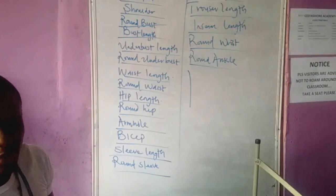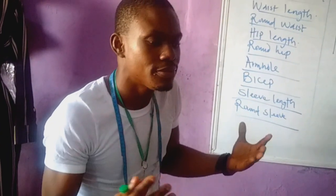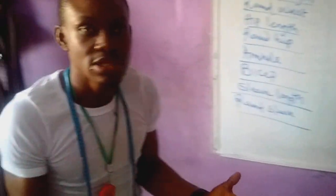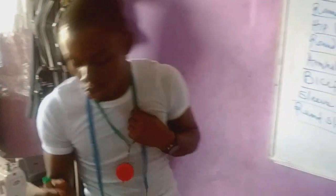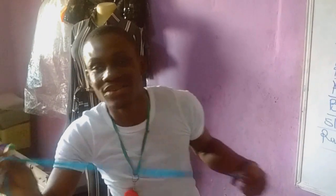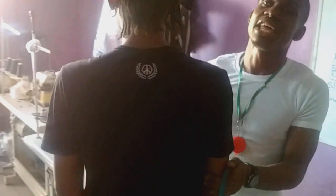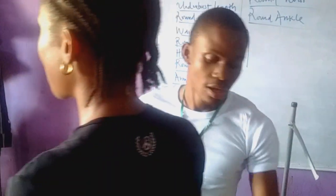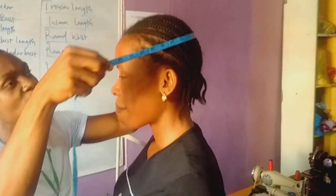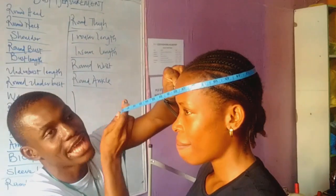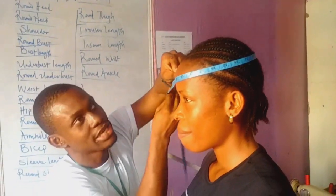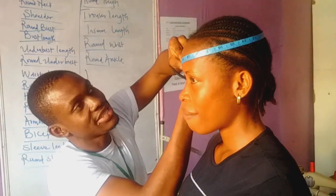Someone might be asking: what do you use head measurement for? Well, if you want to make a cap — depending on any cap you want to make — you must measure the round head. Just put your tape round the forehead, from the back to the forehead. Please don't tighten it.